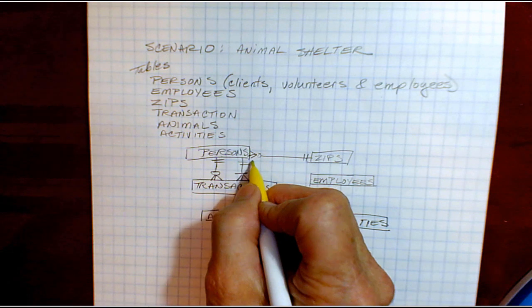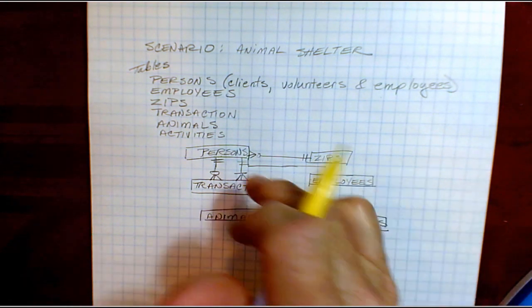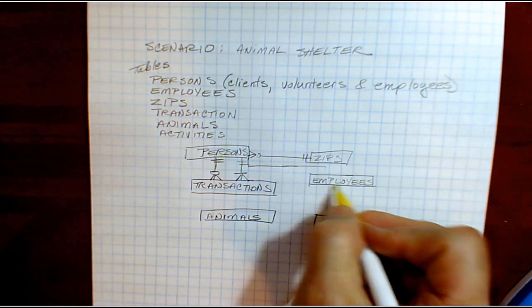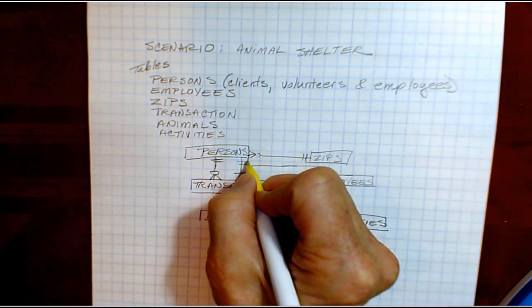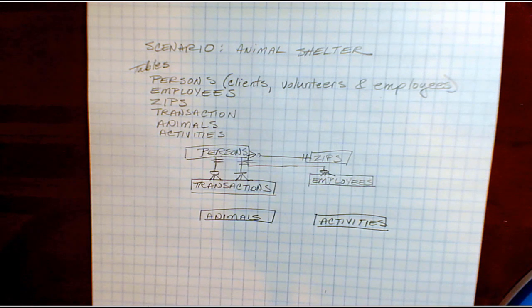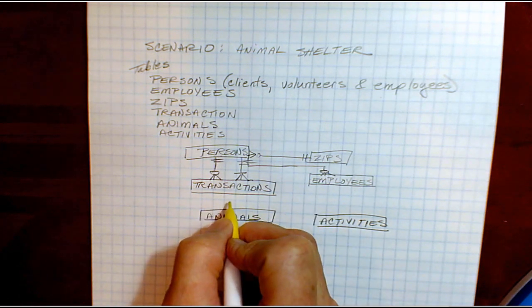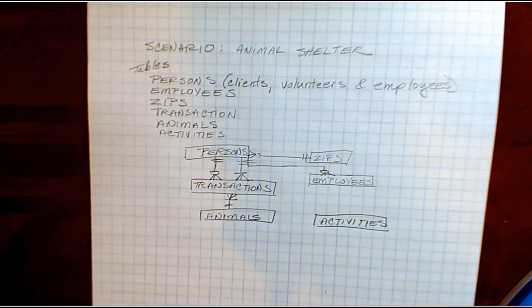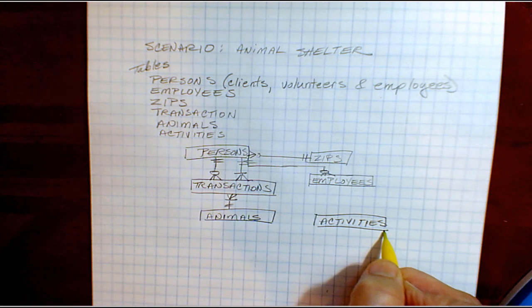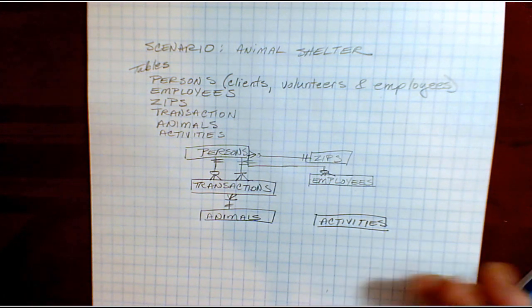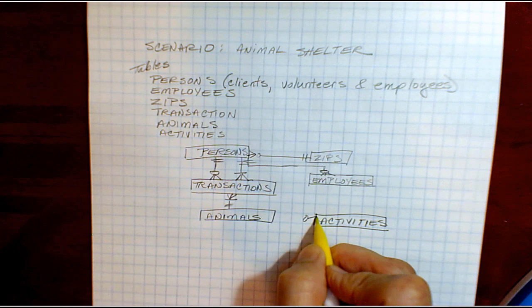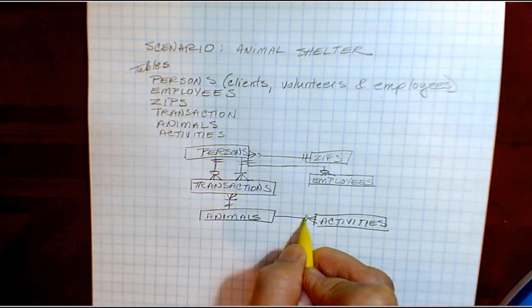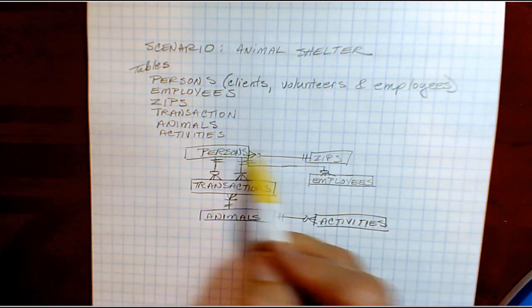We have the employees. We have people in the persons table who are employees. So that relationship is represented by that line. We have the animal that's being brought in or taken home from the animal shelter and that's represented by that line. And then an animal that comes into the shelter may have certain procedures done such as being spayed or neutered, perhaps trained or groomed. And so those will be recorded in activities and they're related to animals. So the line here shows that there's a relationship.